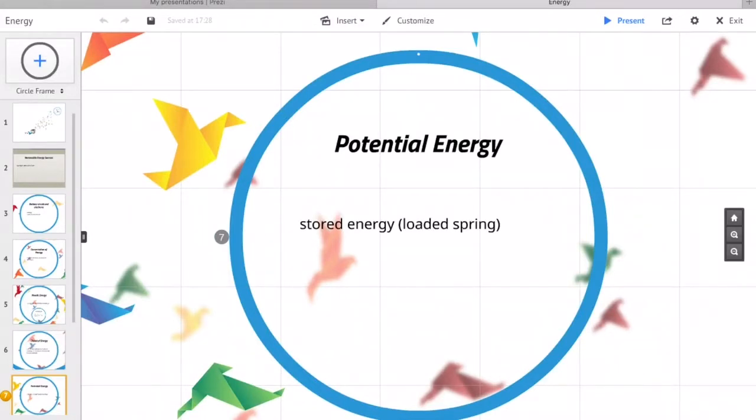Potential energy is the stored energy of an object. It is energy by virtue of an object's position relative to other objects. Examples here are a loaded spring or force of gravity.